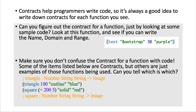Contracts help primary programmers write code, so it's always a good idea to write down contracts for future use. Can you figure out the contract for a function just by looking at some sample code? I think we probably can. Let's look at this text function. In your video notebook, write down the name, domain, and range for this text function. Pause and do that.